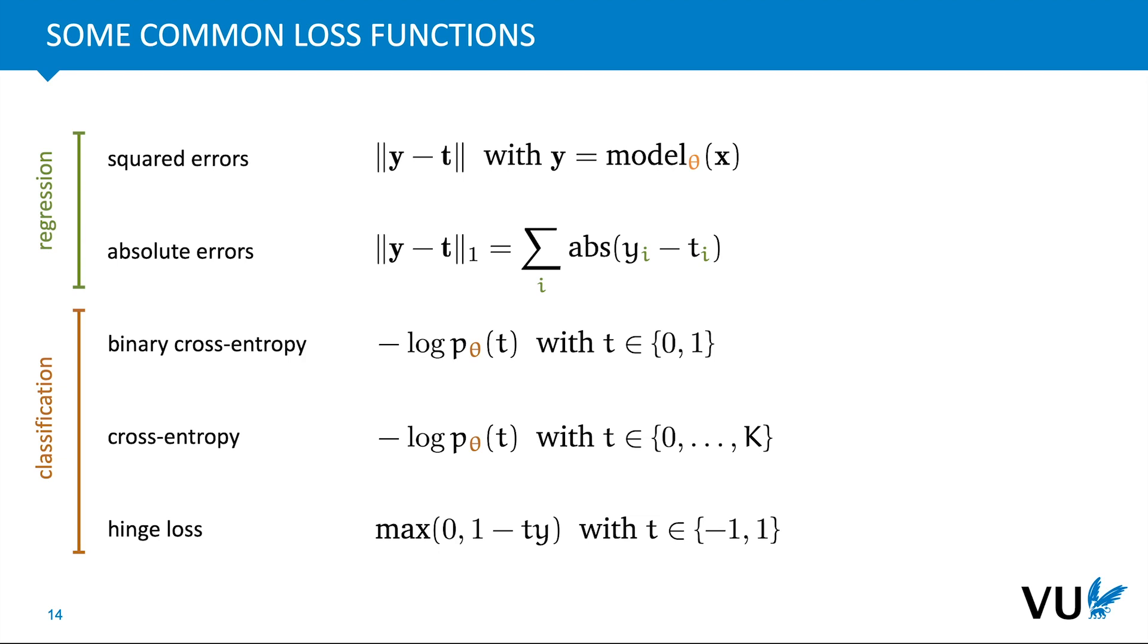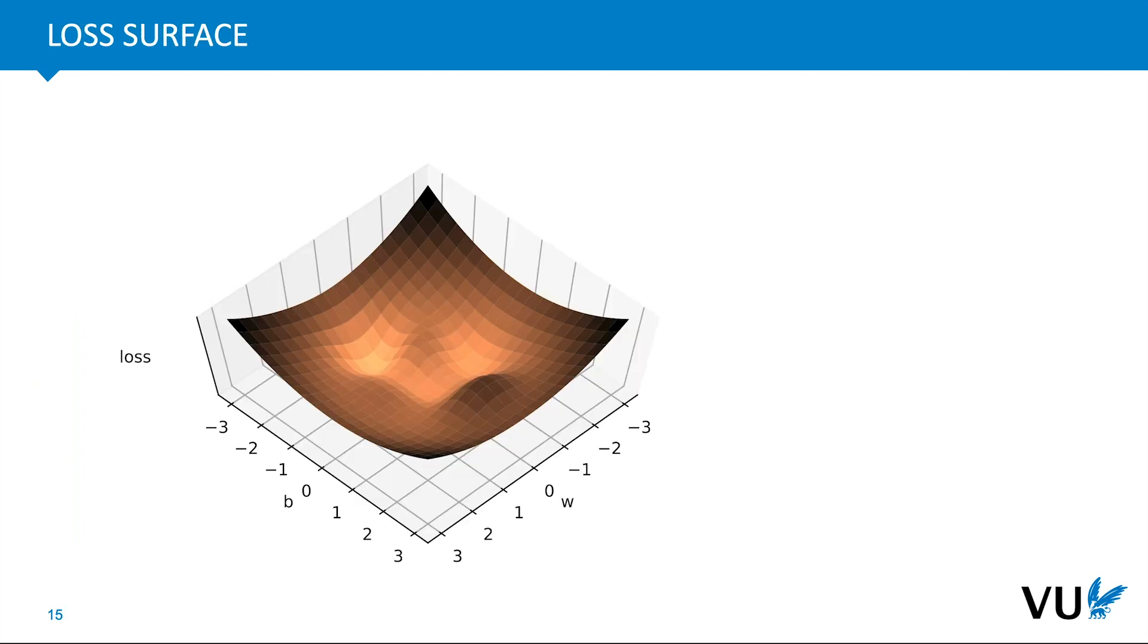If we think of this parameter space, this 2D plane of all parameters, we can think of the loss as forming a surface on top of that parameter space. Practically, we have a higher dimensional parameter space than just a plane, so it's difficult to visualize. But in general, the loss is always a scalar value, so that always forms a surface on top of our parameter space. And for this landscape, this loss surface, we're trying to find the lowest point.